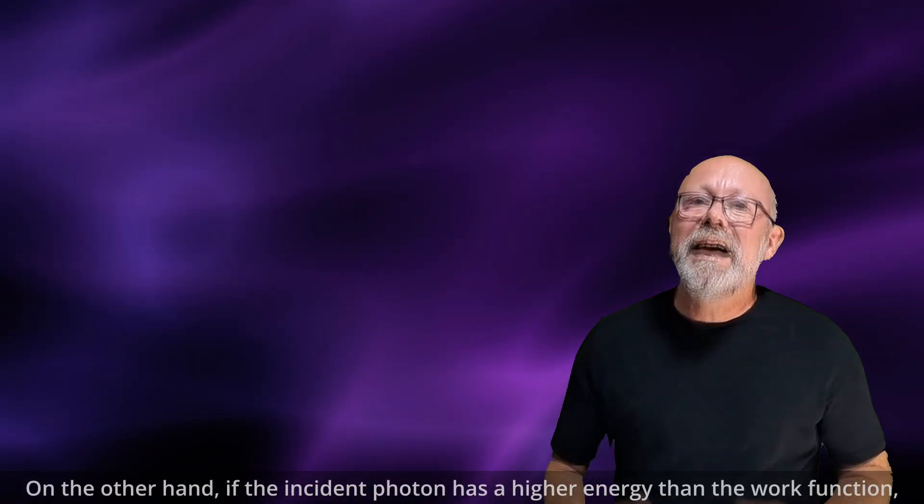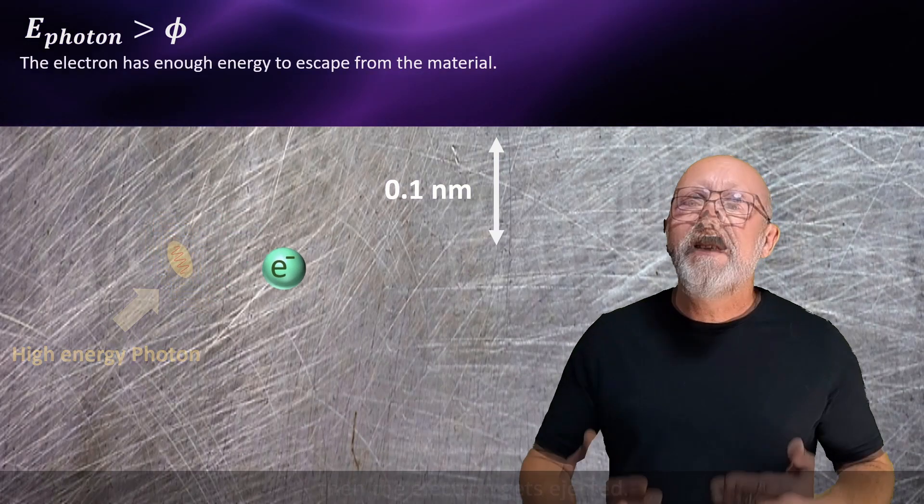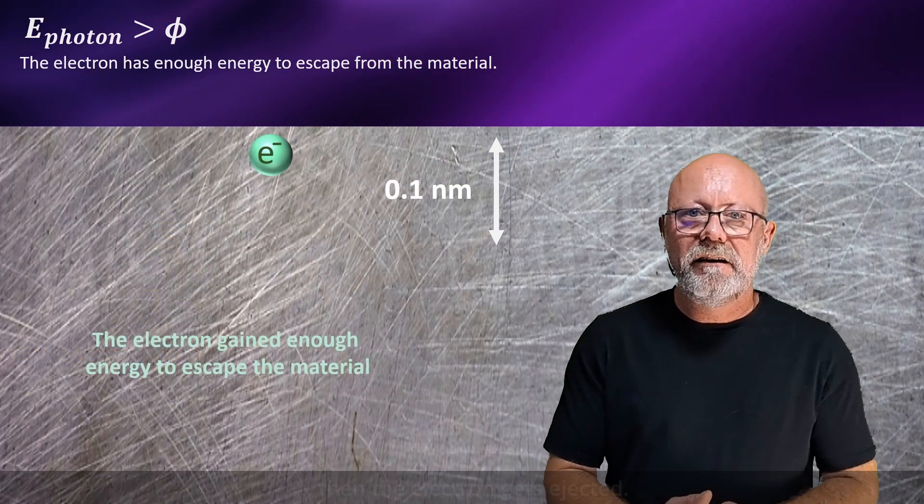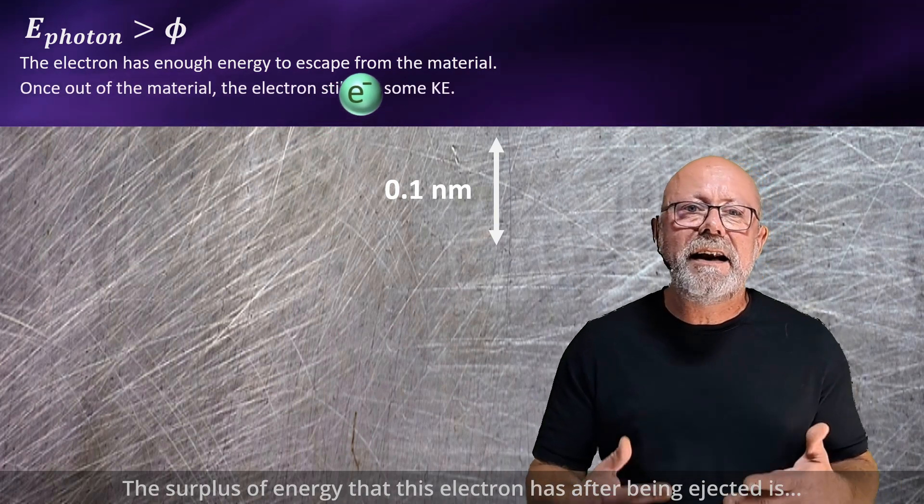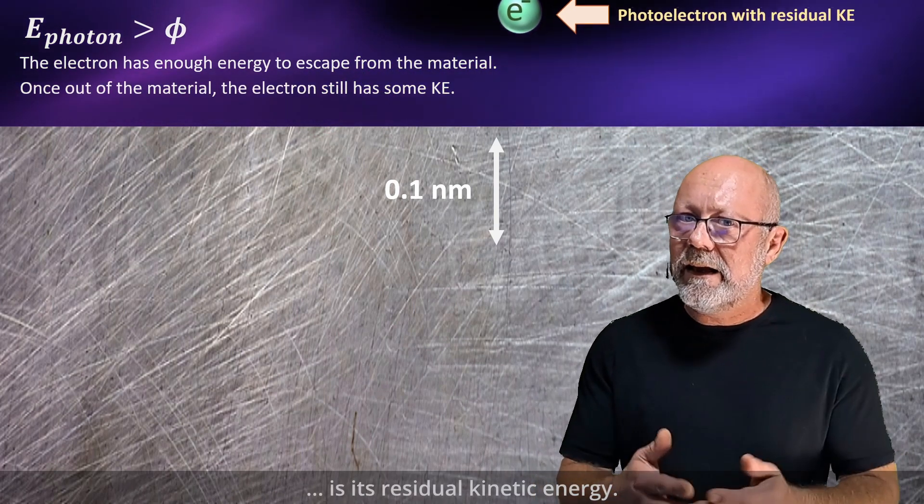On the other hand, if the incident photon has a higher energy than the work function, then the electron gets ejected. The surplus of energy that electron has after being ejected is its residual kinetic energy.